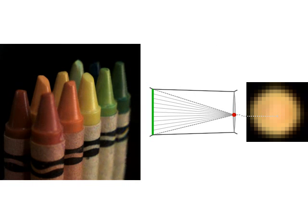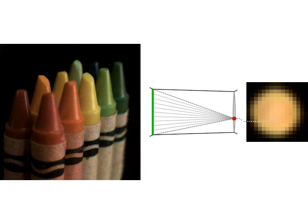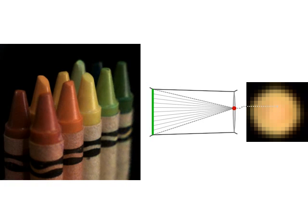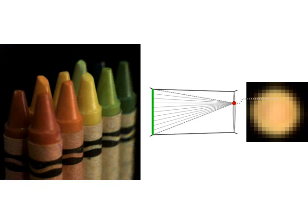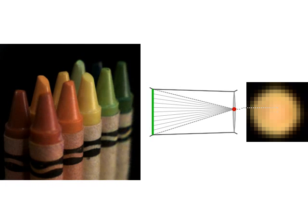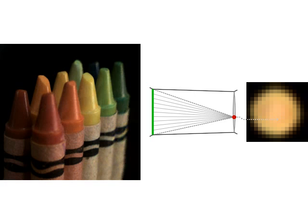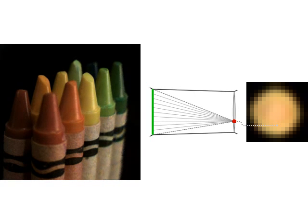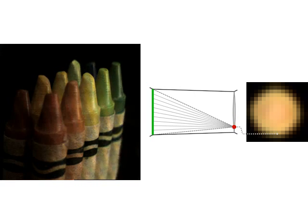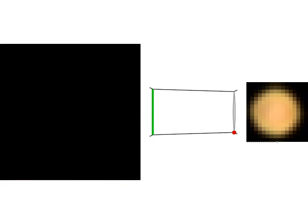Choosing a different pixel from each microlens image, we can move the observer laterally across the original camera aperture. Of course, if we move too far, we will eventually reach the edge of the microlens image, and the view will vignette and eventually disappear.